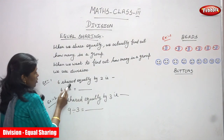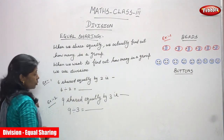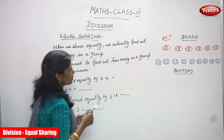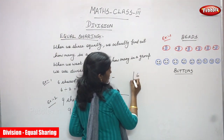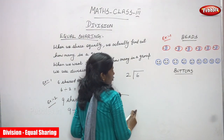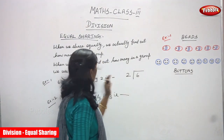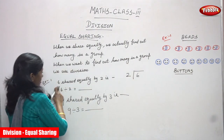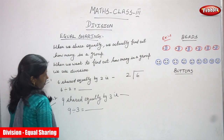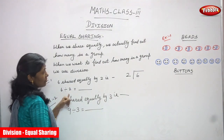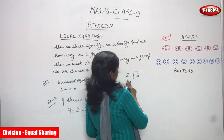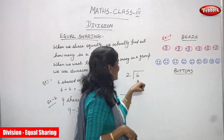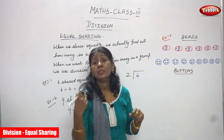6 shared equally by 2 is 6 divided by 2. So, 6 is the dividend and 2 is the divisor, and you have to find out the quotient.